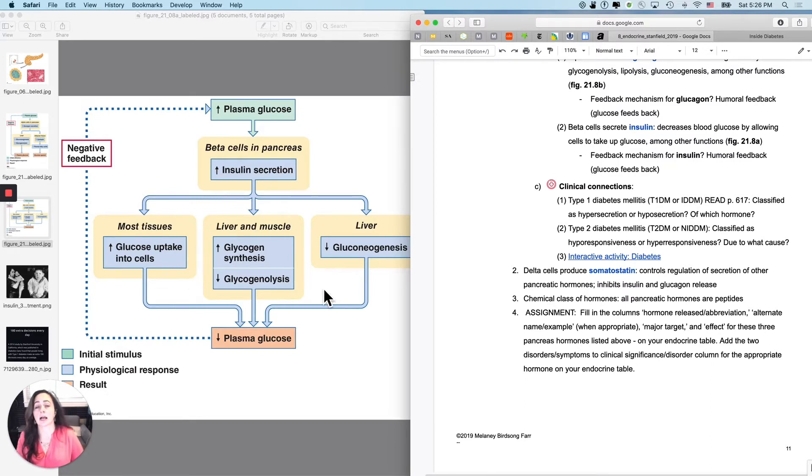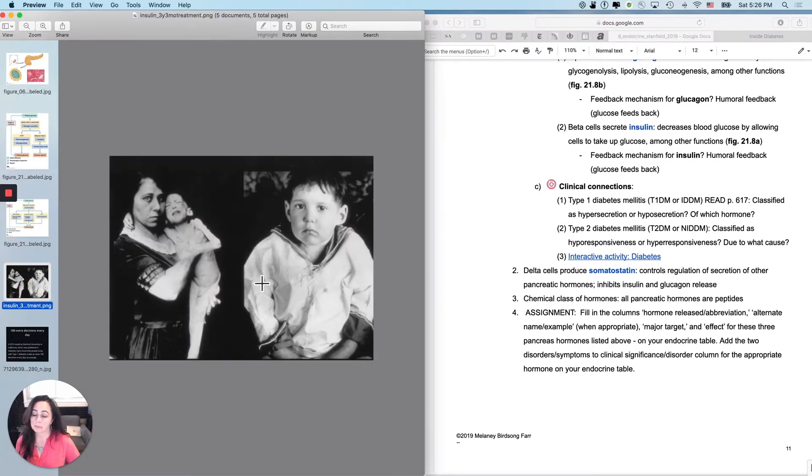Interestingly, before we were able to produce insulin in the lab, it was very often deadly. Here's a historical photo. This child has type 1 diabetes. This child in this picture is three years old and cannot put on any mass, any muscle mass and has a failure to grow. This picture, even though it looks really sad, is after only three months of treatment, after he was diagnosed and treatment became available.